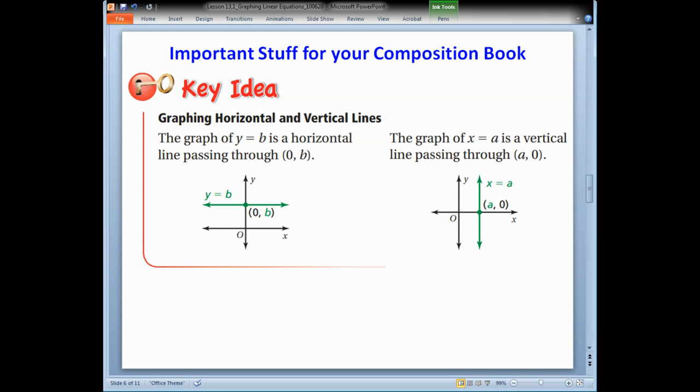More important stuff. So here's an equation of a line right here. This one is y equals b. And b is just a number. It could be negative. It could be positive. It could be a fraction. It could be a decimal. So y equals b is a horizontal line that passes through this point. So I only need one point when I graph horizontal lines. And I show that where that point is on the graph. And then I just draw a horizontal line through it.